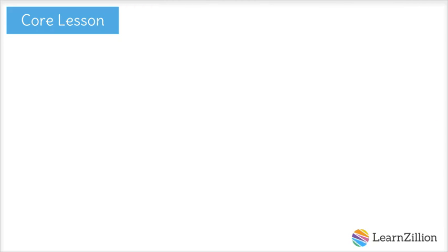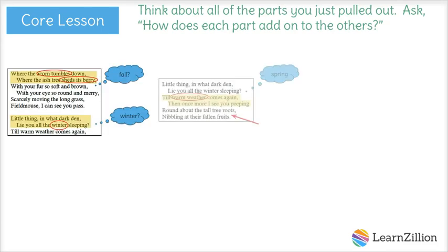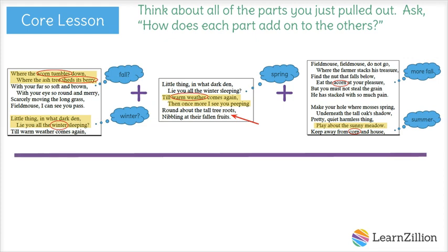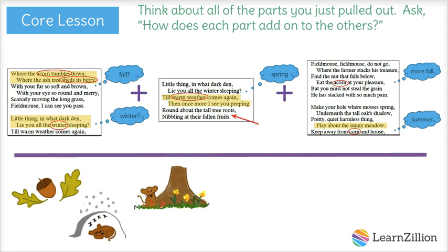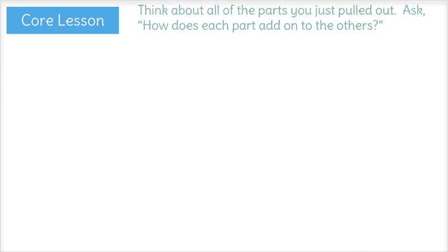Now that I've found so much evidence of a commonality in the stanzas, my last step is to step back and think about all of the parts that I just pulled out. I'm going to ask, how does each part add on to the others? You know what I'm realizing? If you add all of these parts together, you end up with the whole year. By including references to each season, the individual stanzas all build on each other to show that the poem takes place over the course of an entire year.